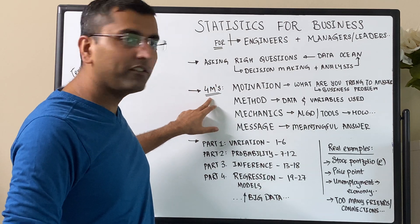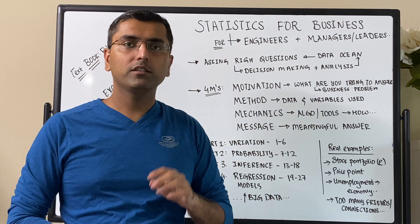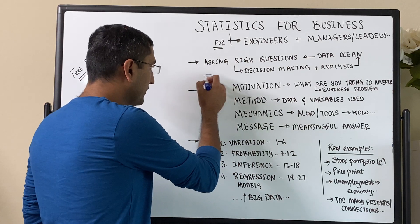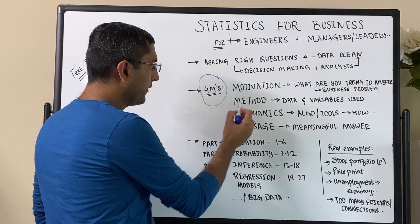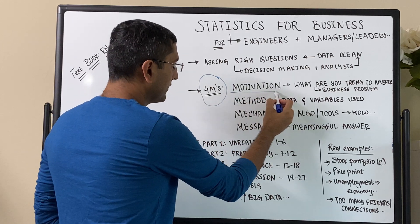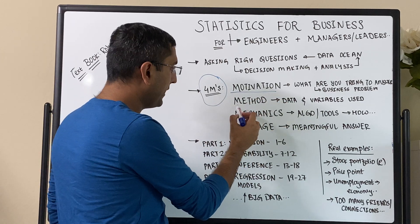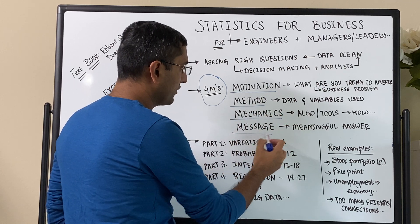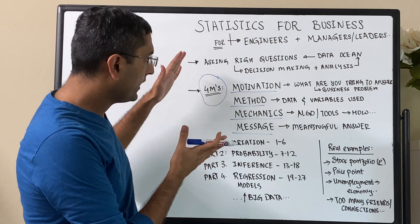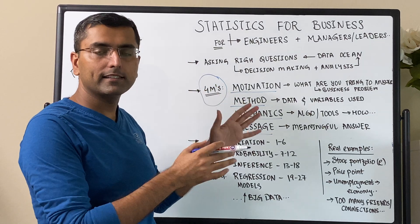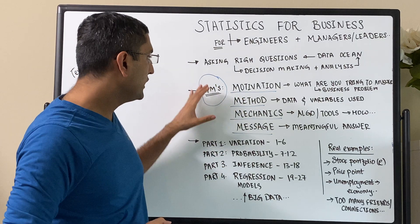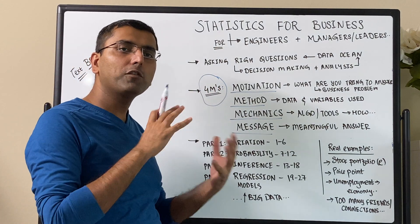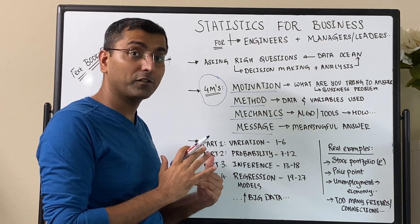And so there is a very good framework to use when you're trying to deal with answering data related questions, and it's called the four M's. The first one is motivation. Second one is the method. Third one is the mechanics. And fourth one is the message. So if you break down a given data analysis or a given data decision into these four structures, then you are now having a structure of how to go about answering those difficult questions.